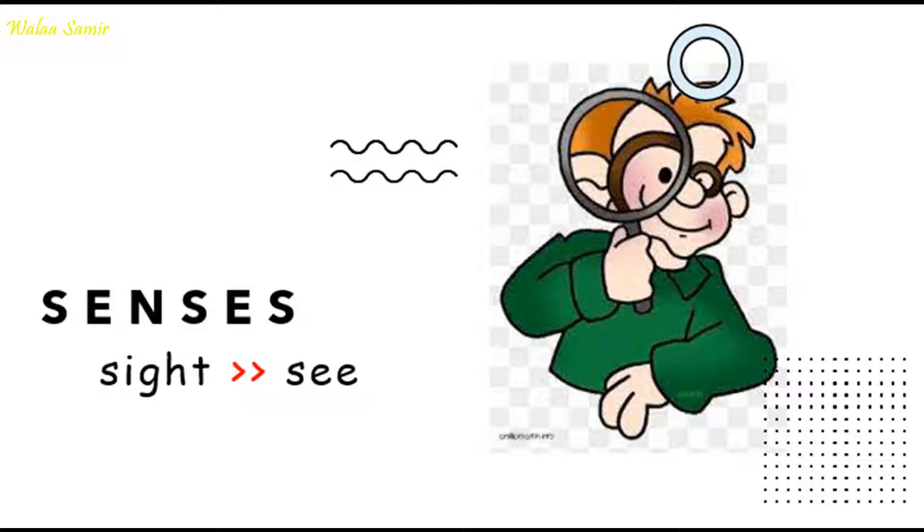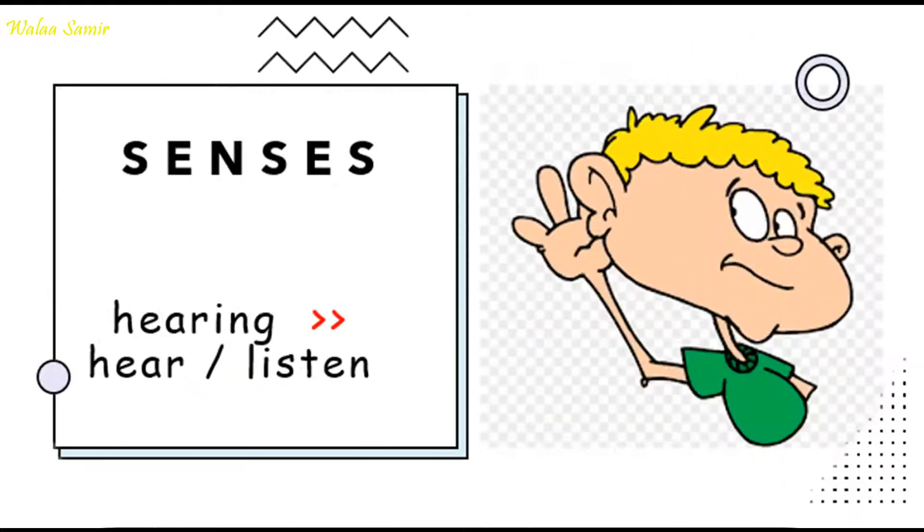The second section is the senses. Our first sense is sight. We use our eyes to see. The second sense is hearing. We use our ears to hear or to listen.